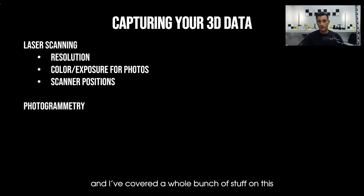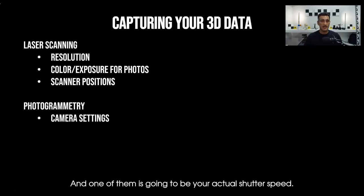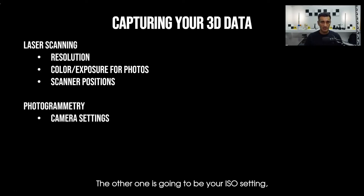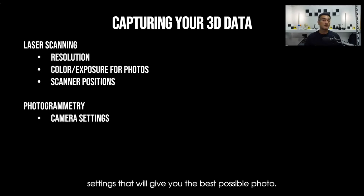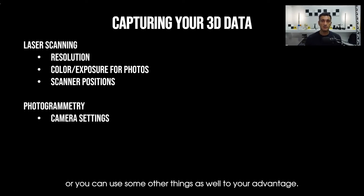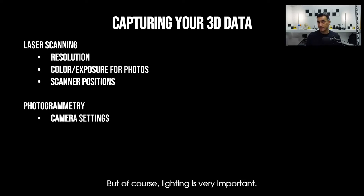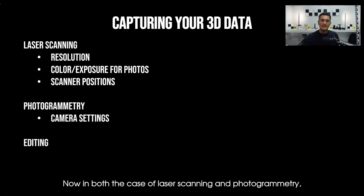Photogrammetry is a big one and I've covered a lot of this in previous videos, so please go back and have a look. Basically there are three things that really matter with your camera settings in order to get proper exposure: your shutter speed, your ISO setting, and your aperture setting. Those three are the important settings that will give you the best possible photo. You can also use HDR or other techniques to your advantage, and of course lighting is very important — if you have an object where you can control the lighting, that is super helpful.